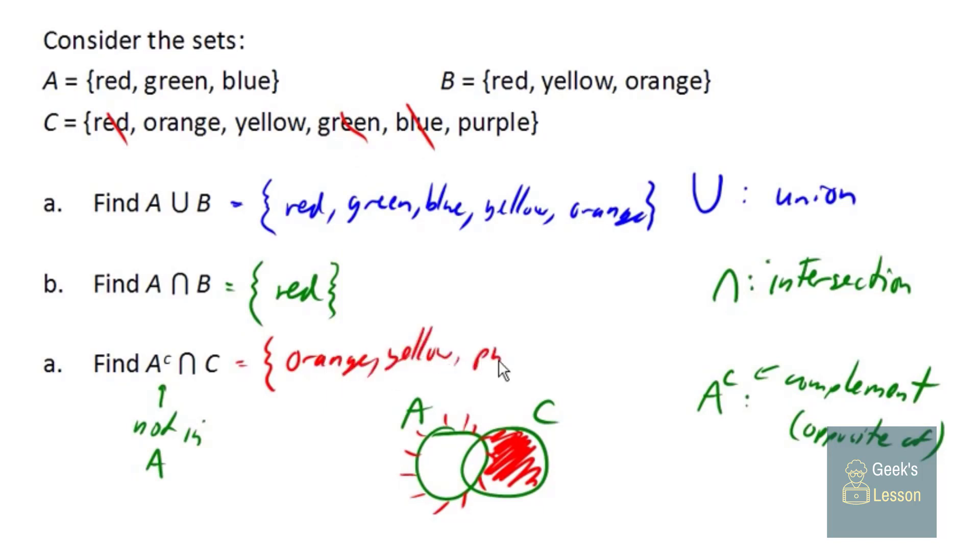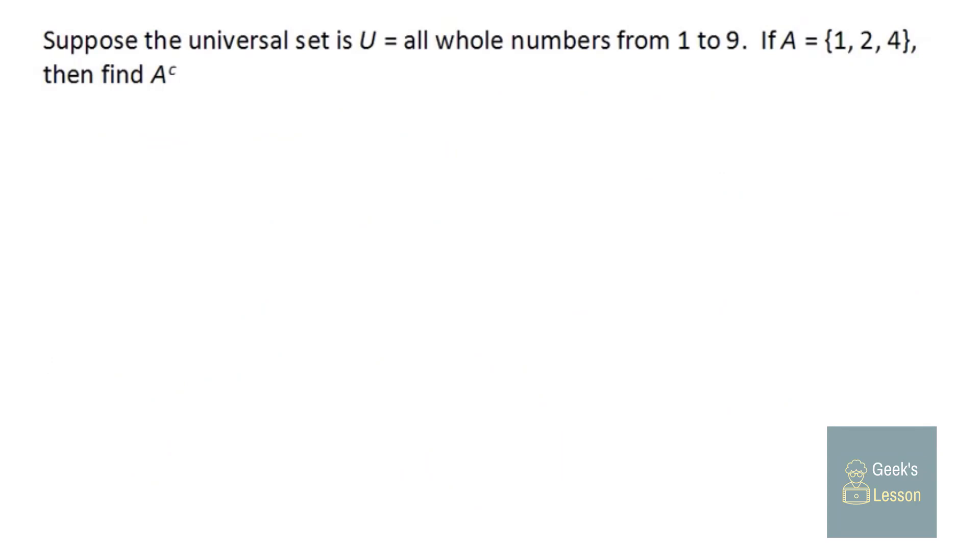Now, as I mentioned, sometimes we have a universal set defined. So in this case, the universal set, in other words, everything that we're talking about is the set of numbers from 1 to 9. In that case, we can talk about the complement all by itself. So if A is the set 1, 2, 4, then A complement would be everything that's in the universal set that's not in set A. And so that would be the numbers 3, 5, 6, 7, 8, and 9. That's everything that's not in A, but that is part of the universal set.